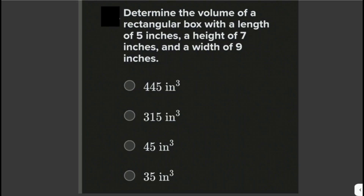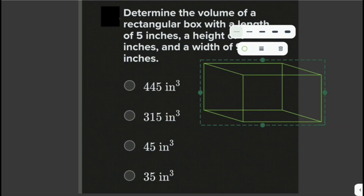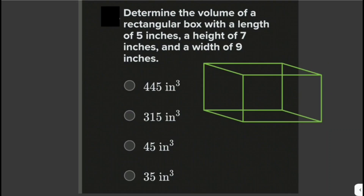Determine the volume of a rectangular box with a length of 5 inches, a height of 7 inches, and a width of 9 inches. Let's draw our rectangular box. The box has a length of 5 inches, a height of 7 inches, and a width of 9 inches. The volume of the rectangular box can be solved using the formula: length times width times height.